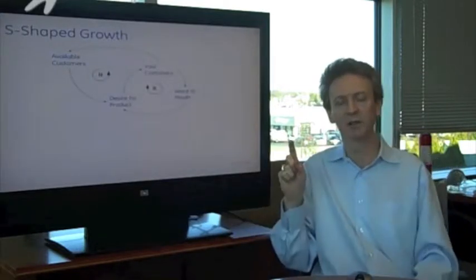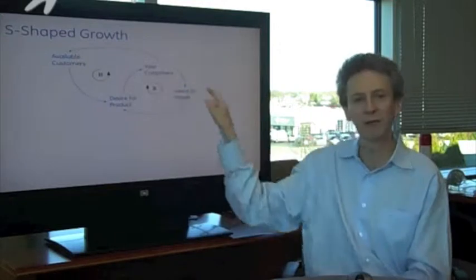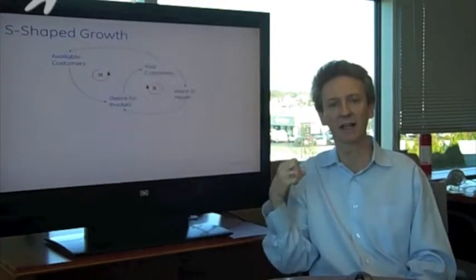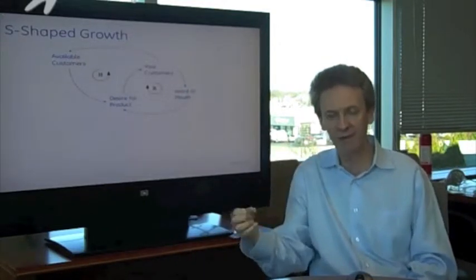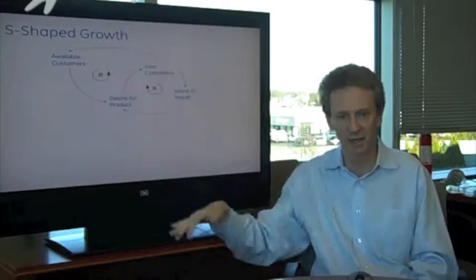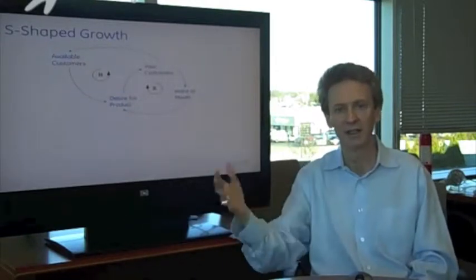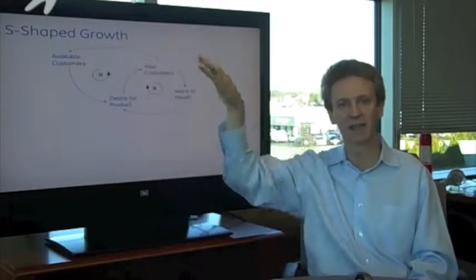So if you recall, S-shaped growth is really driven by two loops. One is a reinforcing loop, so you get a product out there, you get good reference sites, and the word of mouth drives desire for your product on other customers. They become your customers and you have this reinforcing spiral when your product is taking off.